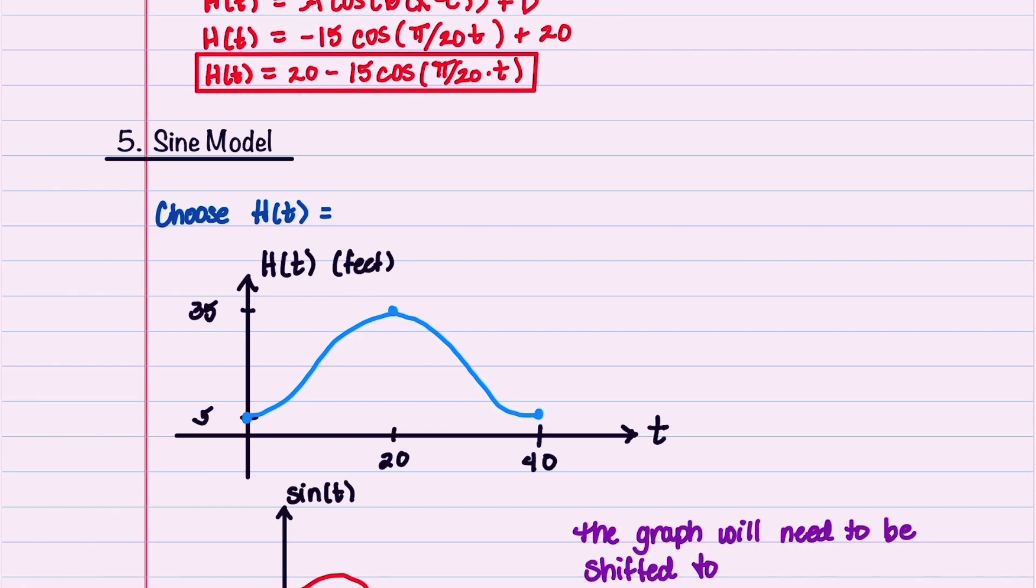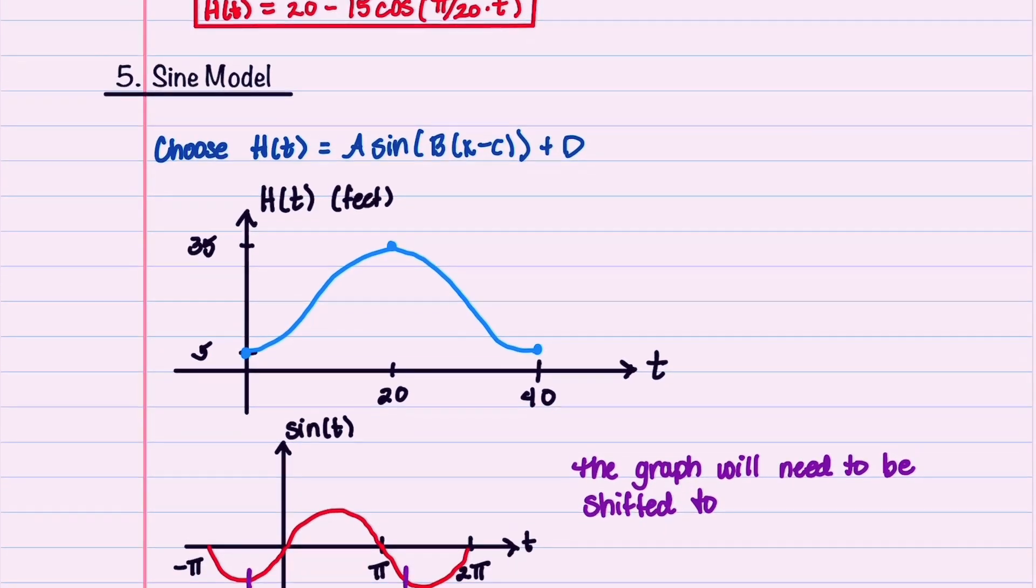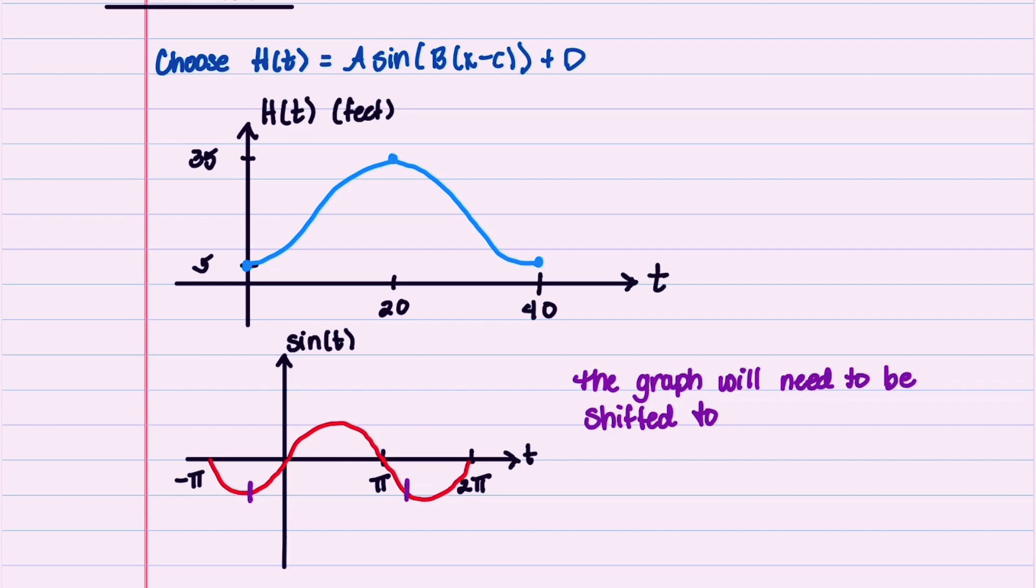Let's now let h of t be our sine function so that we can see how a phase shift works. We'll choose h of t to be equal to A times sine B times t minus C plus D. Comparing our graphs of h of t and sine t, we can see that if sine t shifts to the right, it will resemble h of t. We'll note that our sine graph will need to be shifted to the right. This tells us that our phase shift C is not equal to 0.